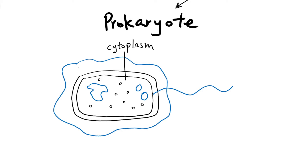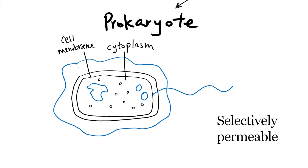Next we have the cell membrane, which is the inner part here. The cell membrane is actually very, very thin and is usually pushed against the cell wall on the outside. Every cell has a cell membrane keeping the cytoplasm inside, and the cell membrane is what we call selectively permeable — it controls what can go into and out of the cell.